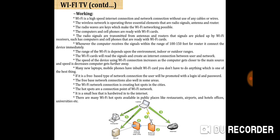How it works: Wi-Fi is a high-speed internet connection and network connection without the use of any cables or wires. The wireless network operates on three essential elements: radio signals, antenna, and router. The radio waves are the keys that make Wi-Fi networking possible. Computers and cell phones are equipped with Wi-Fi cards. Radio signals are transmitted from antennas and routers, and those signals are picked up by Wi-Fi receivers such as computers and cell phones. Whenever a computer receives signals within the range of 100 to 150 feet from the router, it connects immediately. The Wi-Fi cards read the signals and create an internet connection between the user and the network. The speed increases as the computer gets closer to the main source and decreases as it gets farther away.